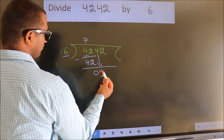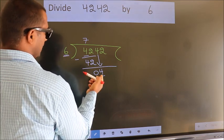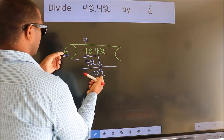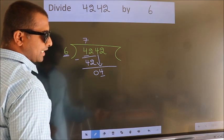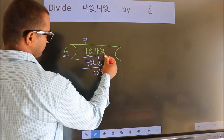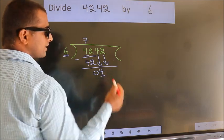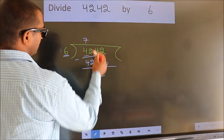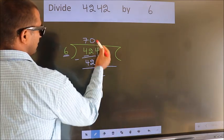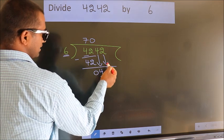Here we have 4, here 6. 4 smaller than 6. So we should bring down the second number. And the rule to bring down the second number is put 0 here. Then only we can bring down this number.